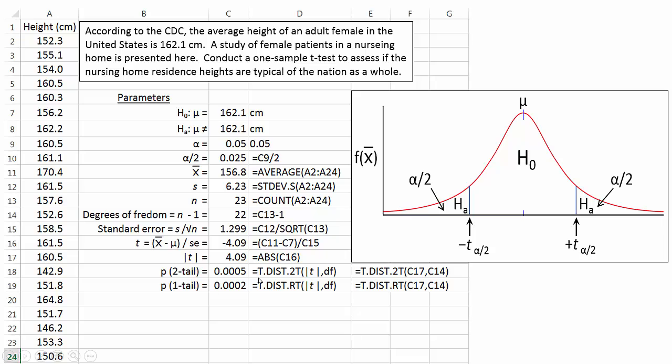The command for that is equal t dot dist dot 2t. 2t stands for two tail because we're using a two tail model. Parentheses and then your argument is your absolute value of t, comma degrees of freedom. So to do that, we go equal t dot dist dot 2t parentheses c17 comma c14. If we were doing a one tail model instead of a two tail model, we would use a different command. We'd be using equals t dot dist dot rt standing for right tail, the positive value of t, comma degrees of freedom. I'm showing you the cells right there. But in this example, we're going to do a two tail, so we're using this value.